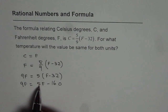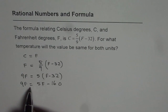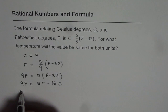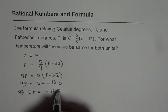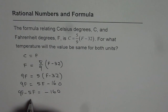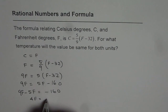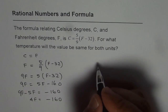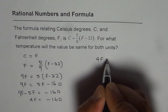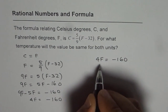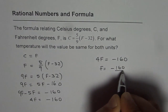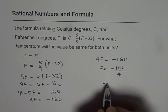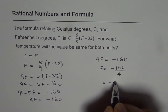Now we take away 5F from both sides, giving us 9F minus 5F equals minus 160, which is 4F equals minus 160. So F equals minus 160 divided by 4, which gives us a value of minus 40.